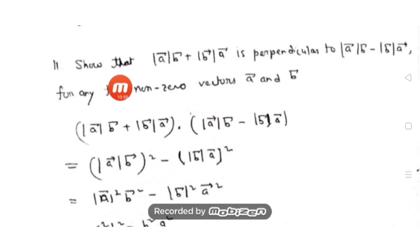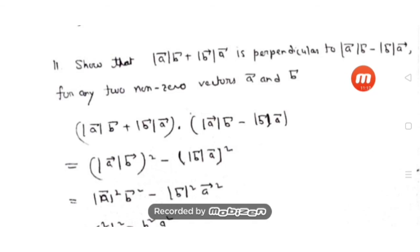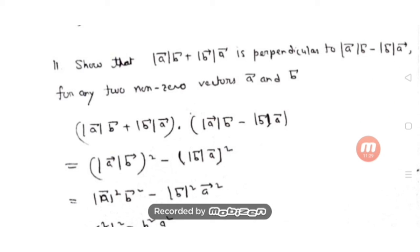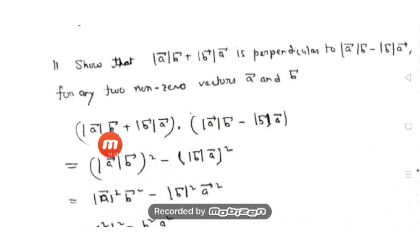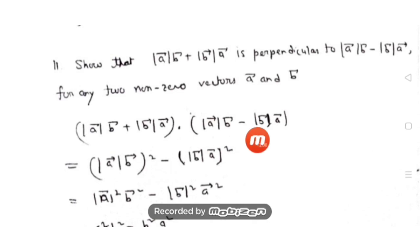Question number 11: show that (|a|b + |b|a) is perpendicular to (|a|b - |b|a) for any two non-zero vectors a and b. Since a and b are non-zero, their magnitudes are not zero. We need to show the dot product of these two vectors equals zero. Using the identity (p + q)·(p - q) = |p|² - |q|², we get (|a|b)² - (|b|a)².